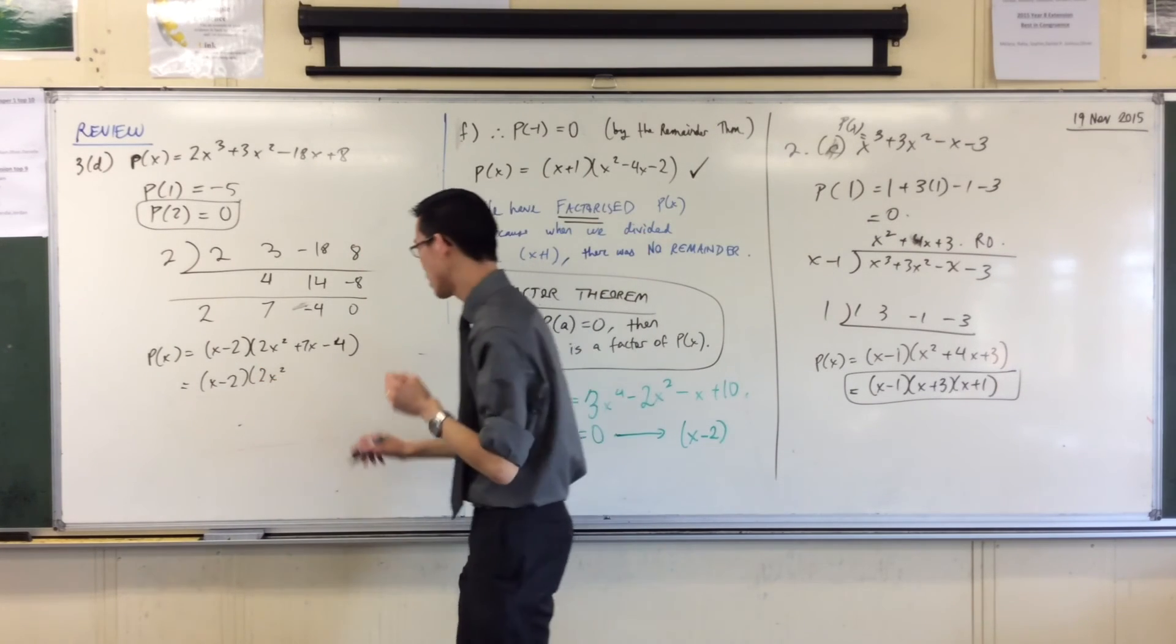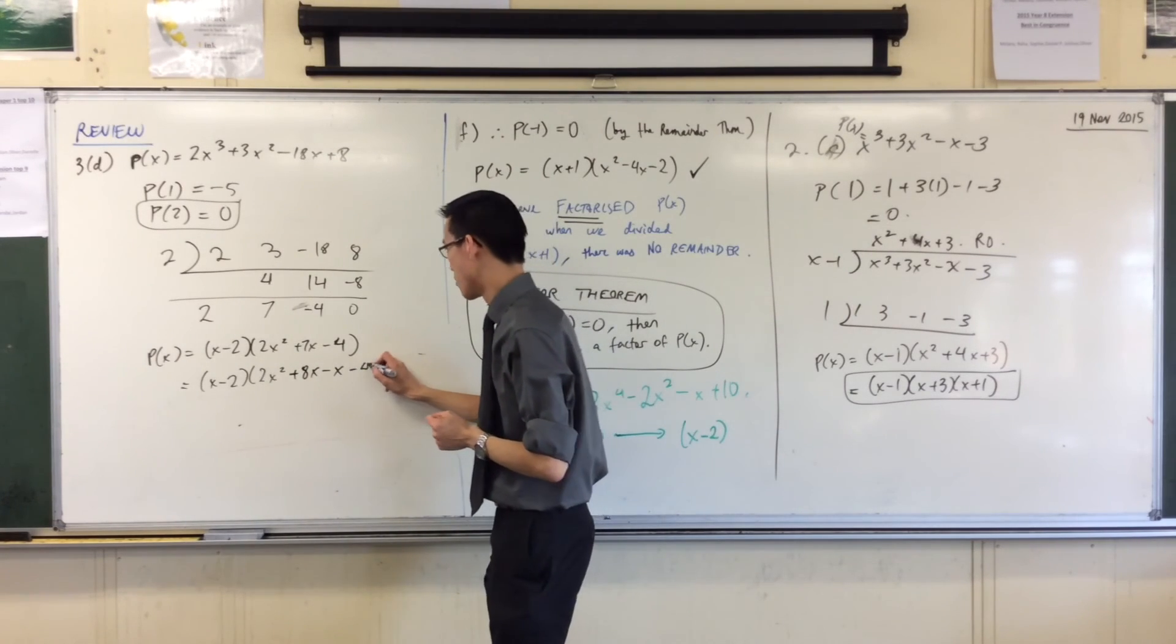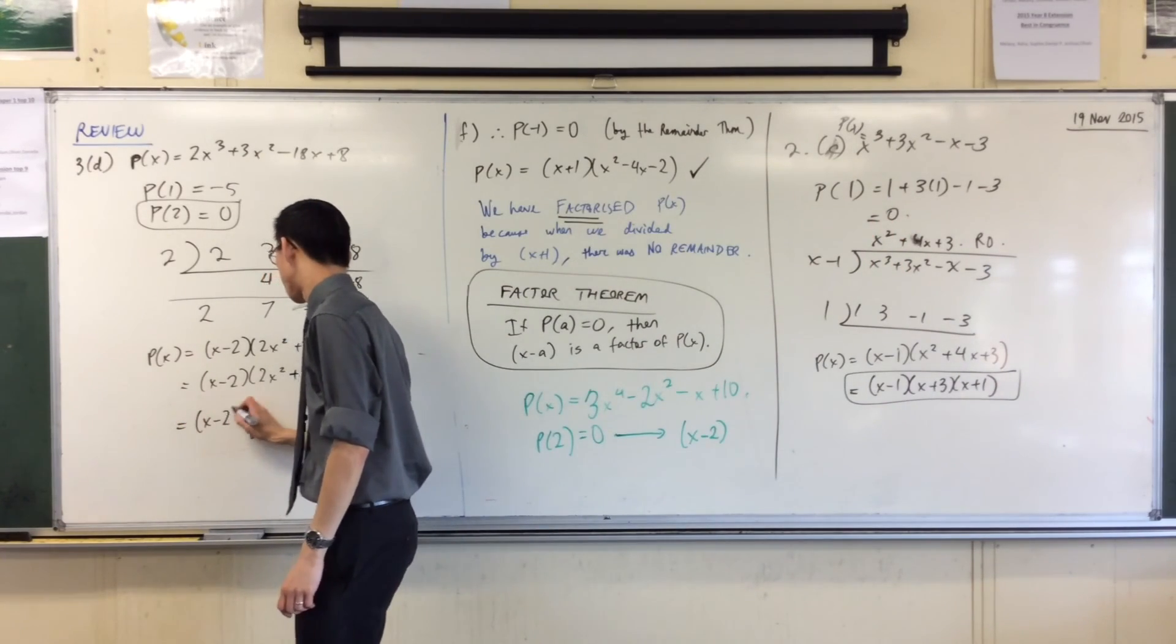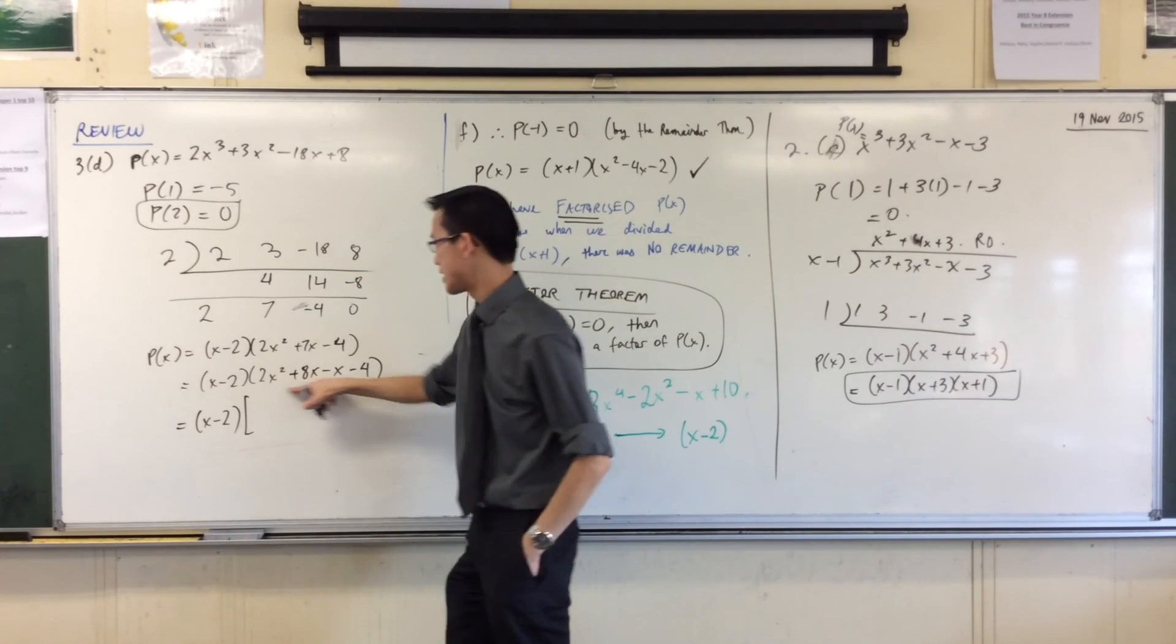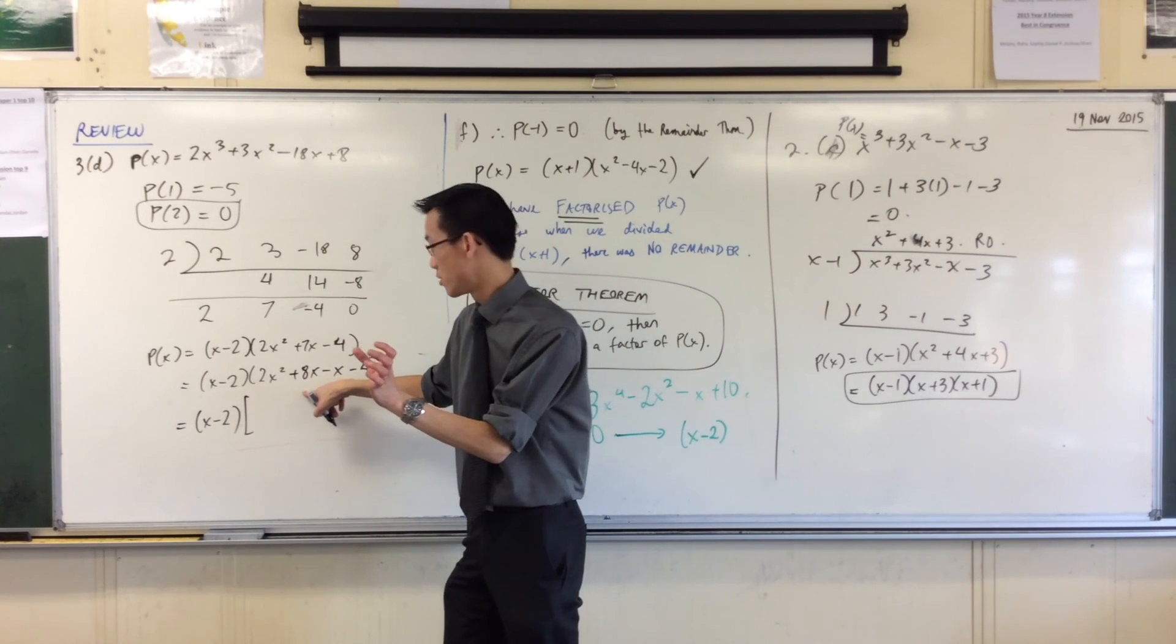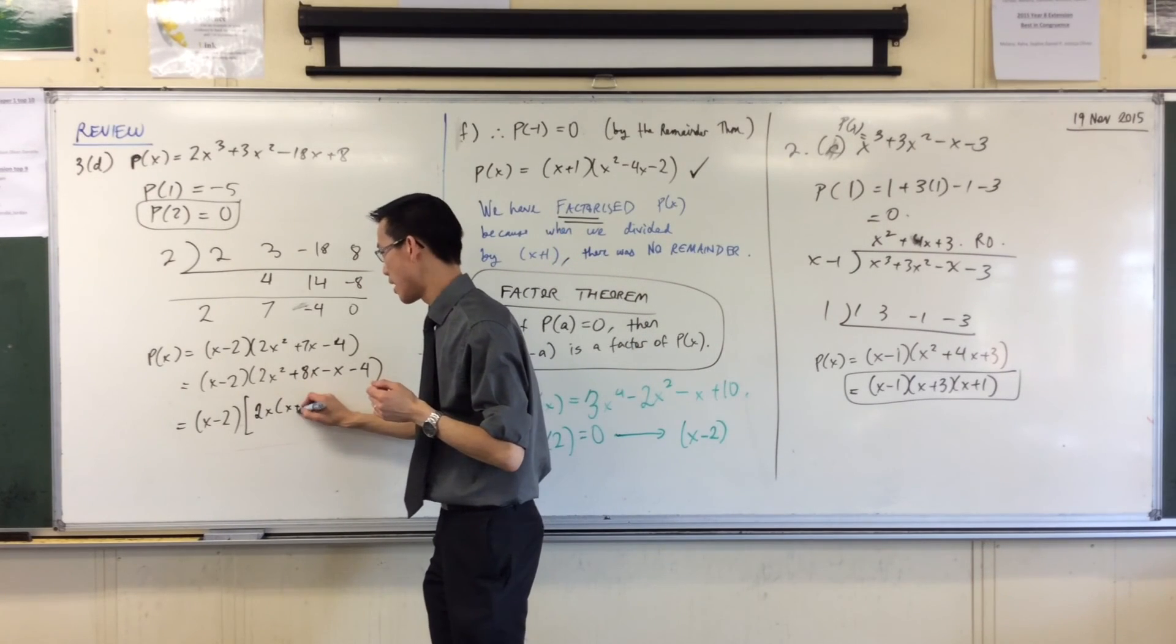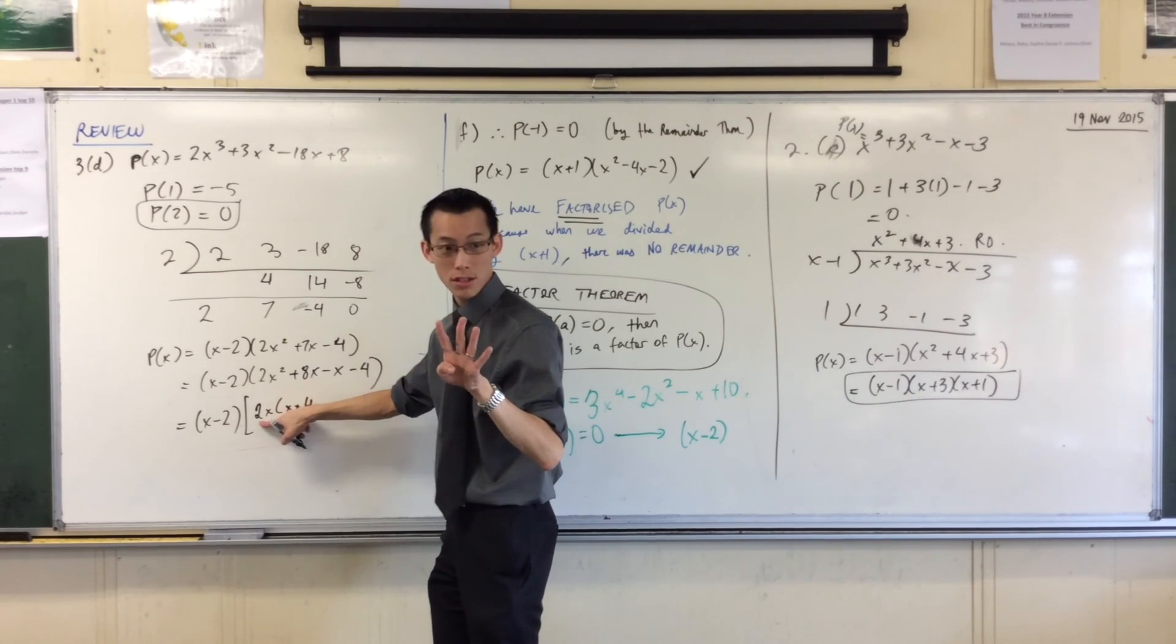So what did we just say? Eight and negative one. So I'll go plus 8x minus negative one x minus 4. Do you remember me breaking apart that middle term in order to factorize? Now I can do this. What is this thing going to look like? I can say, what can I take out of 2x squared plus 8x? What can I take out of that?